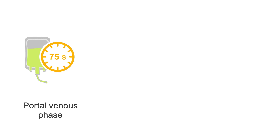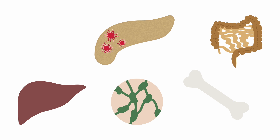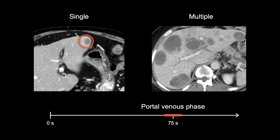The portal venous phase is also used to complete staging of cancers in the abdomen and pelvis, which includes looking for metastases and abnormal lymph nodes. Metastases are sites in the body where tumor cells have spread that are separate from the primary or original site of tumor. These sites can include the organs, lymph nodes, bones, and bowel. A common site for cancer to spread is the liver. The two examples here show the typical appearance of single and multiple liver metastases, which are generally rounded masses that enhance less than the background liver.